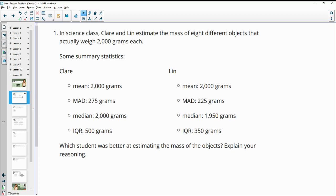Number one, in a science class, Claire and Lynn estimate the mass of eight different objects that actually weigh 2,000 grams each. Here are the summary statistics. Which student was better at estimating the mass of the objects? Explain your reasoning.